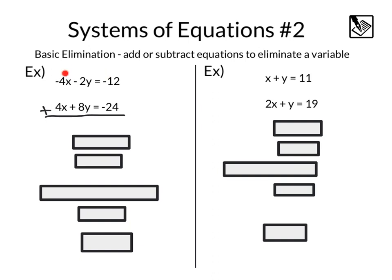Since this side is equal to this side, this side is equal to this side, the result is still going to maintain equality and still make mathematical sense. We can see that this negative 4x plus 4x will cancel out. Negative 2y plus 8y will give us a 6y and negative 12 plus negative 24 is negative 36. Now we have an equation we can solve. We will get y equals negative 6.